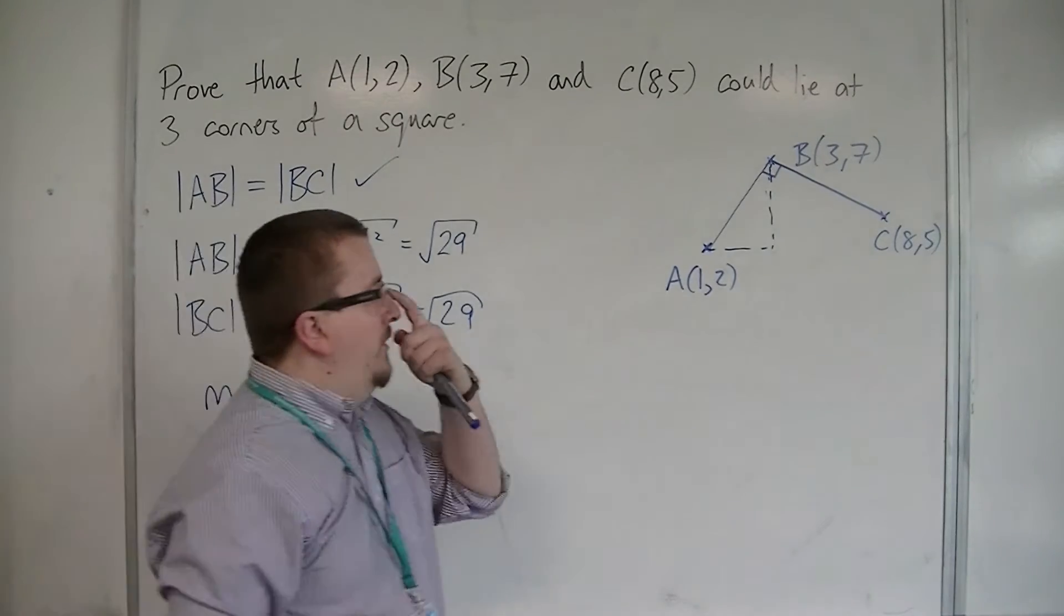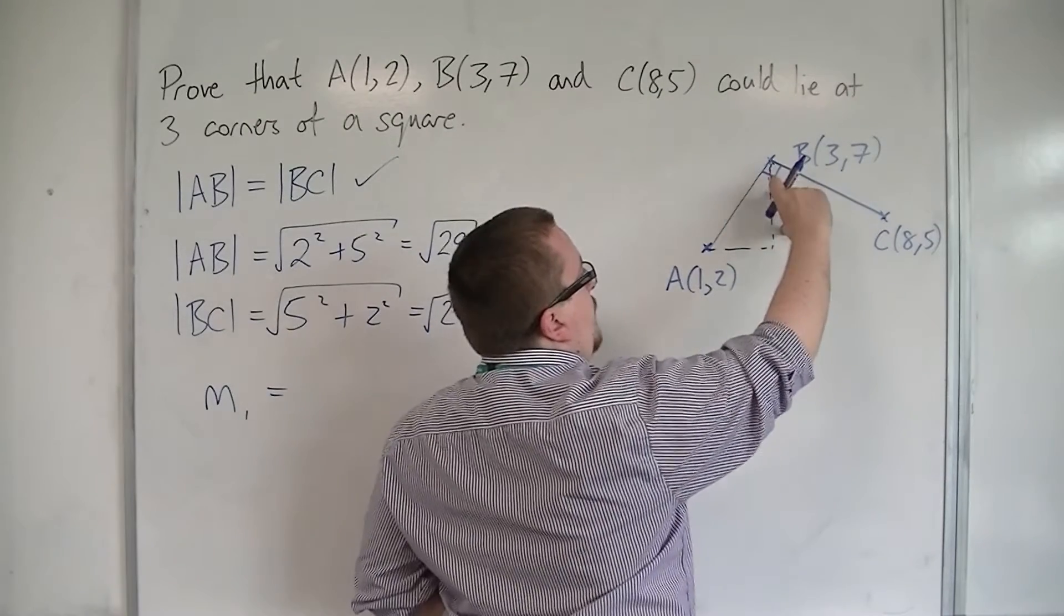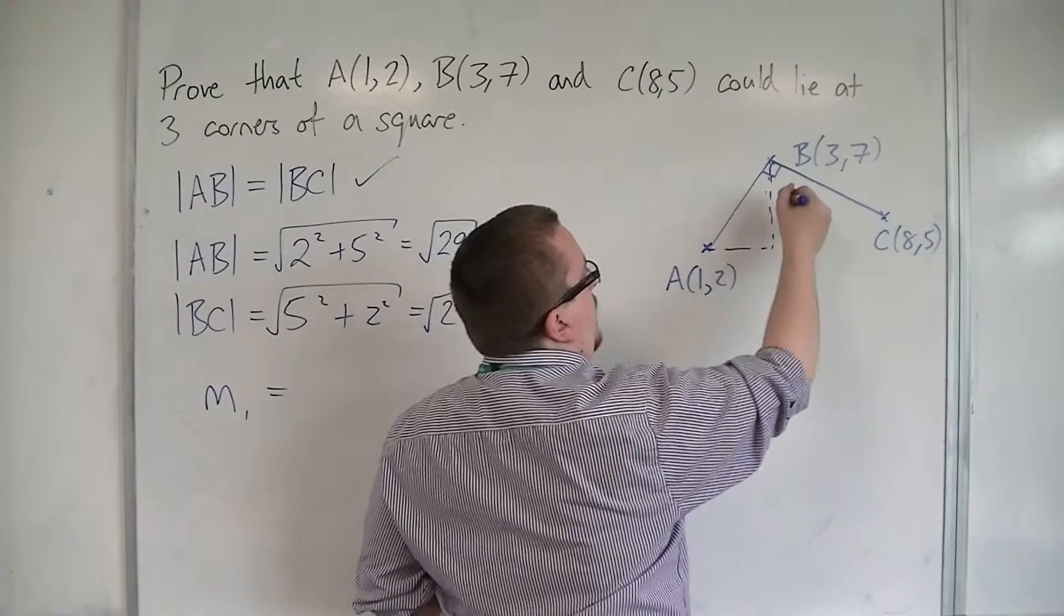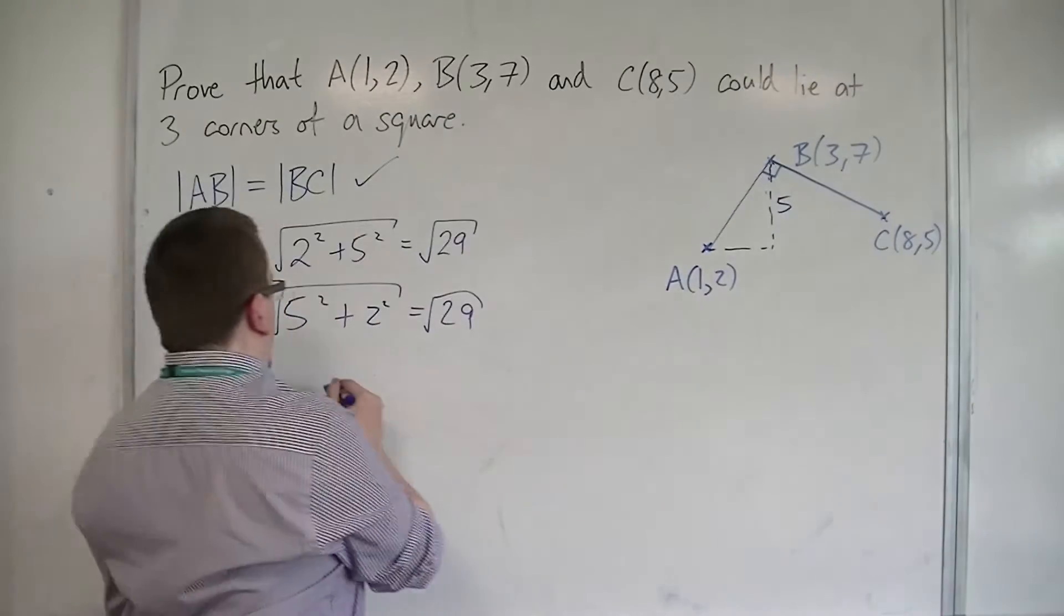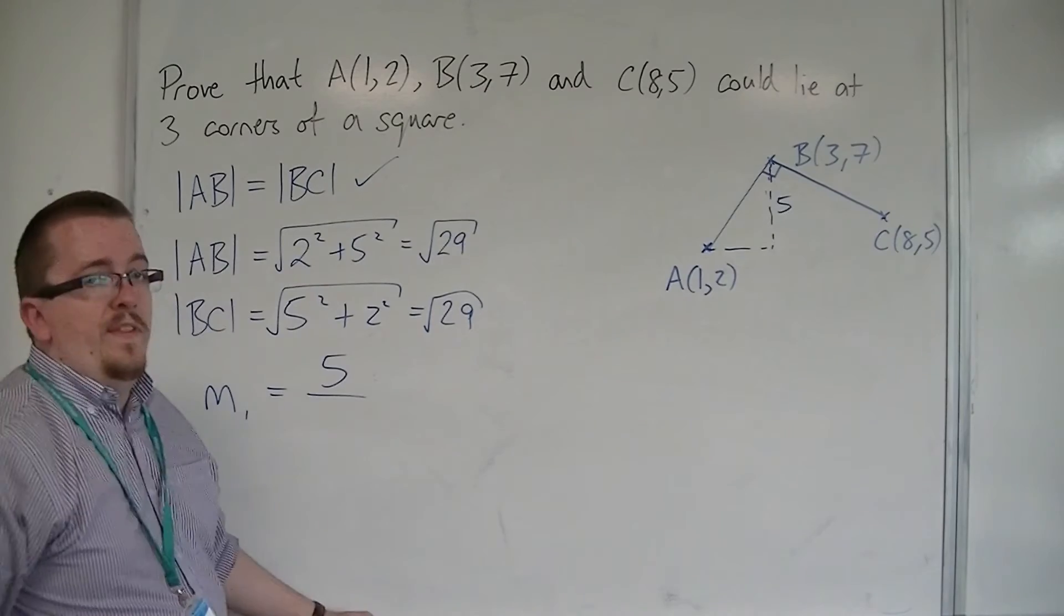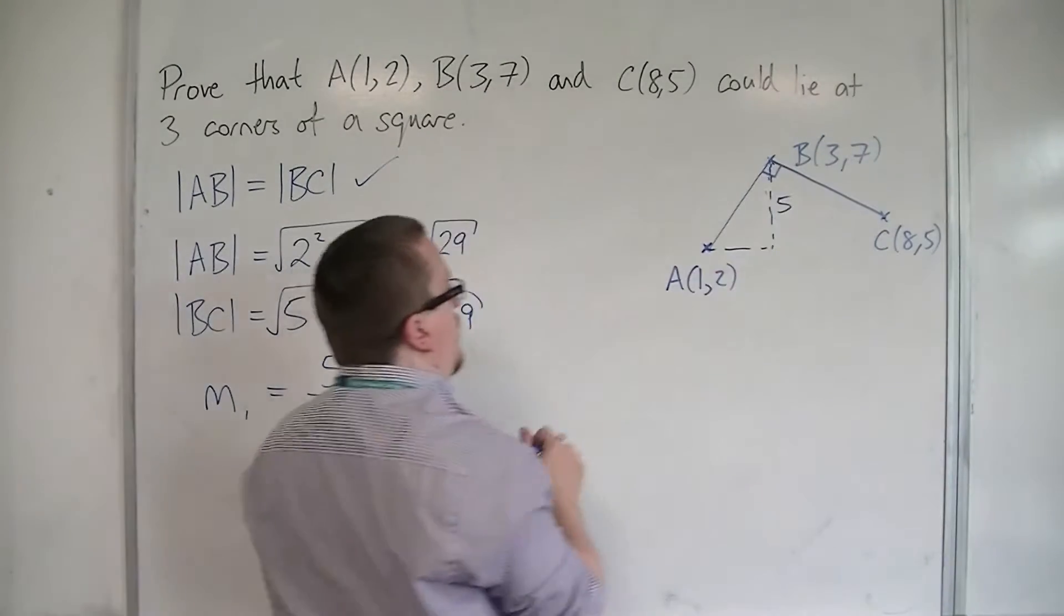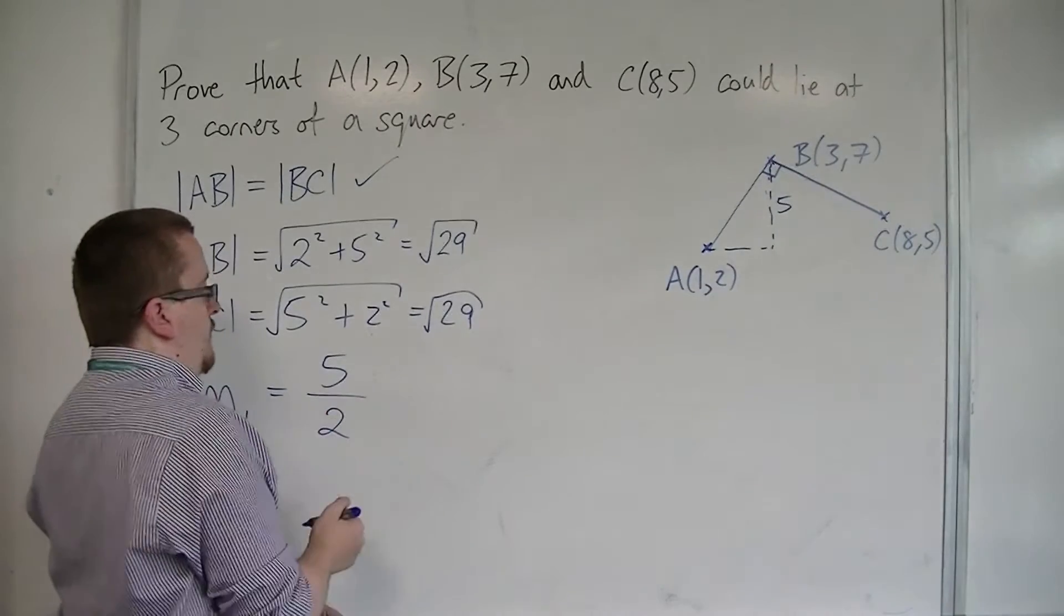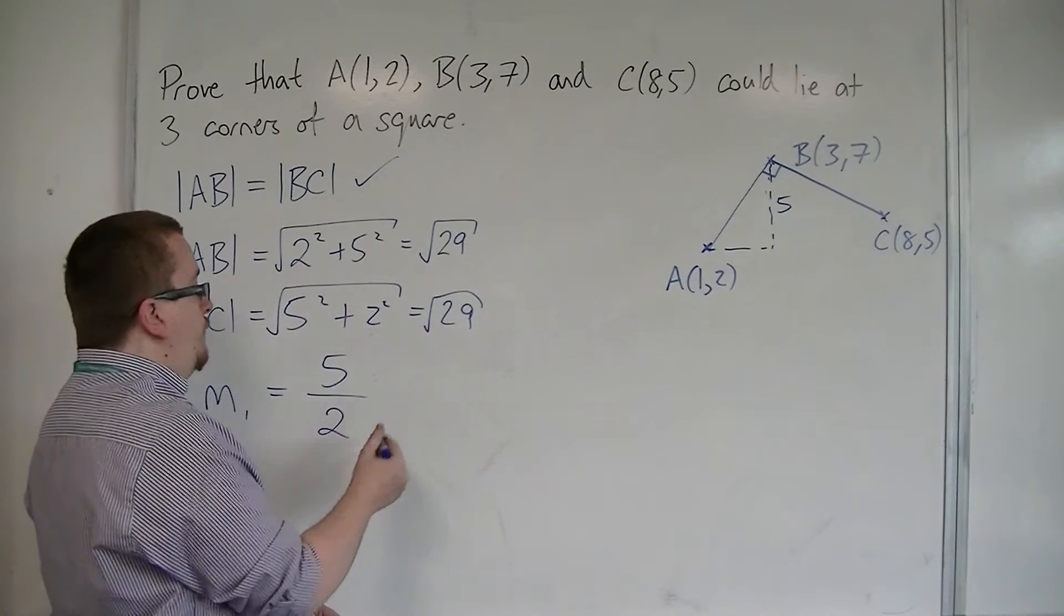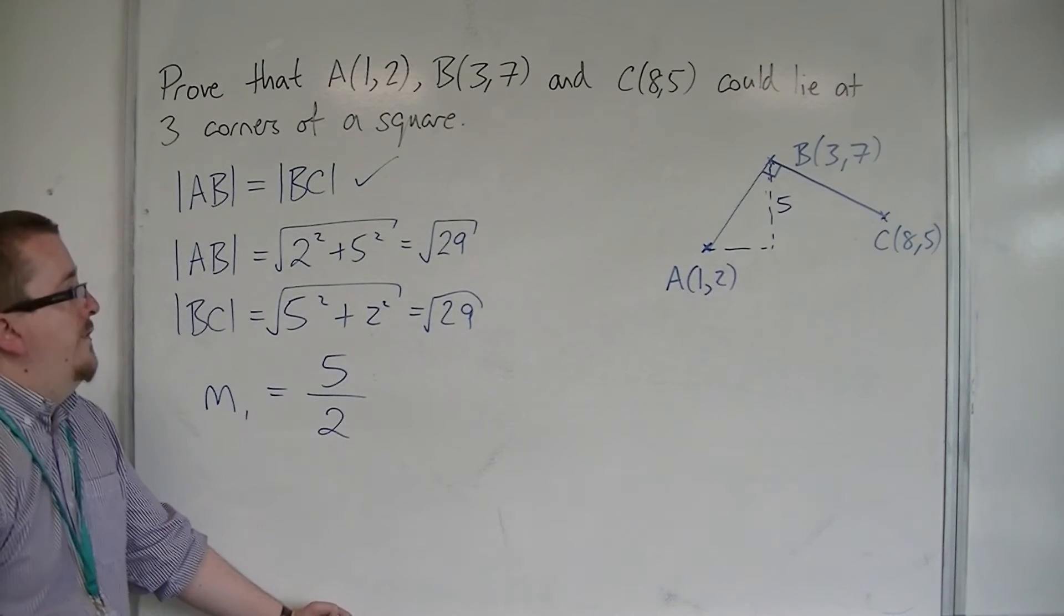So the gradient of AB is the difference of the y-coordinates, which is 7 take away 2, so that's 5, divided by the difference in the x-coordinates, which will be 3 take away 1, so 2. So, the gradient of AB is 5 halves.